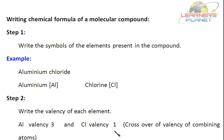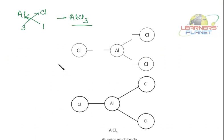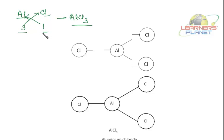The third step is the crossover of valencies of combining atoms. This is the symbol of aluminium with valency 3, and chlorine with symbol Cl and valency 1. The cross placement of valencies is done, and the formula comes out to be AlCl3 — aluminium chloride.